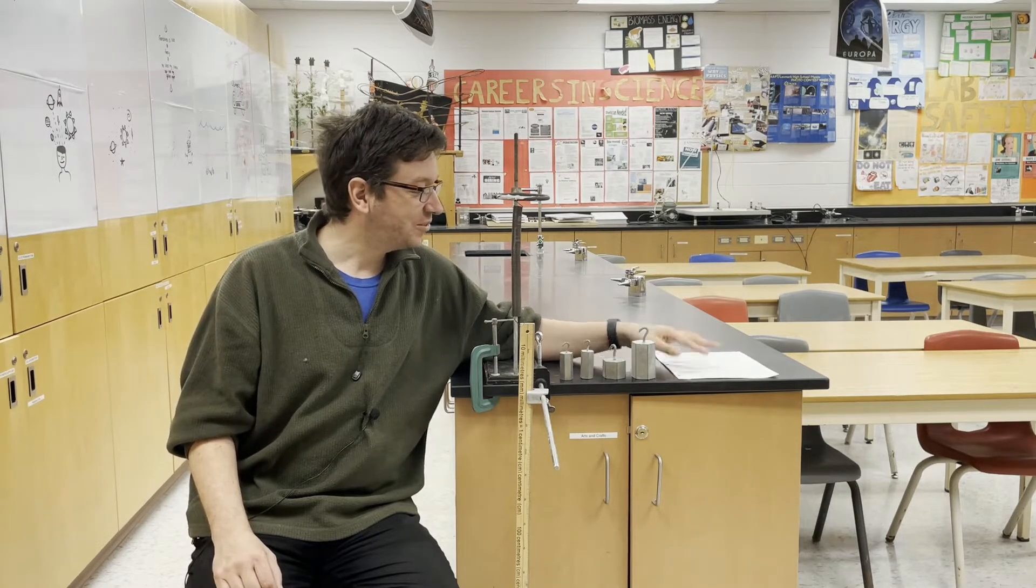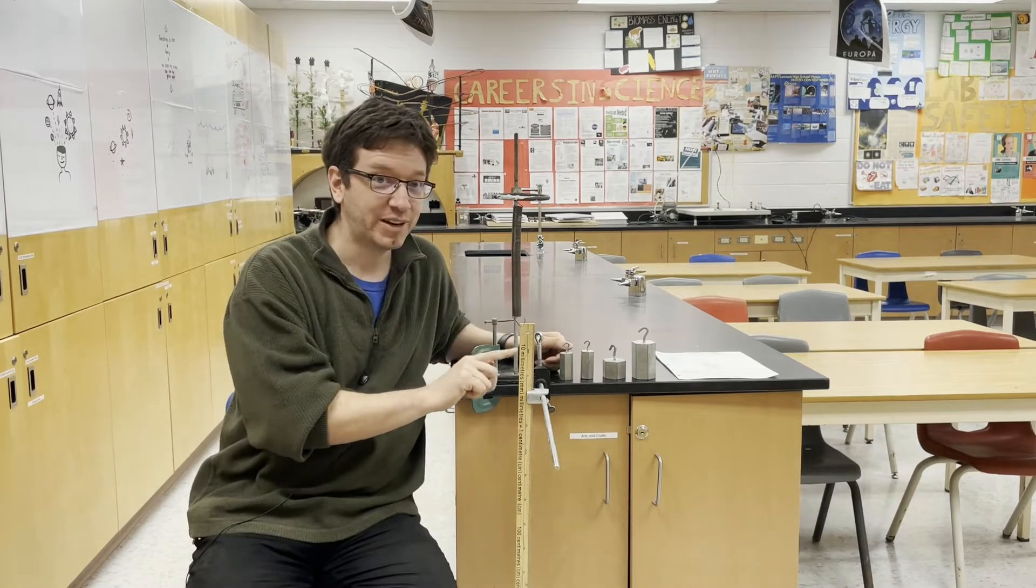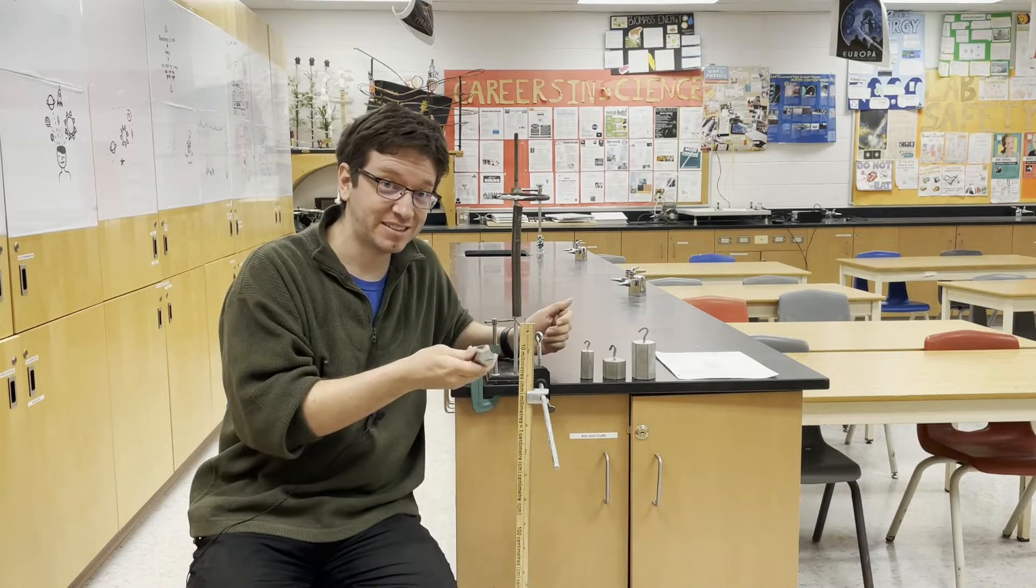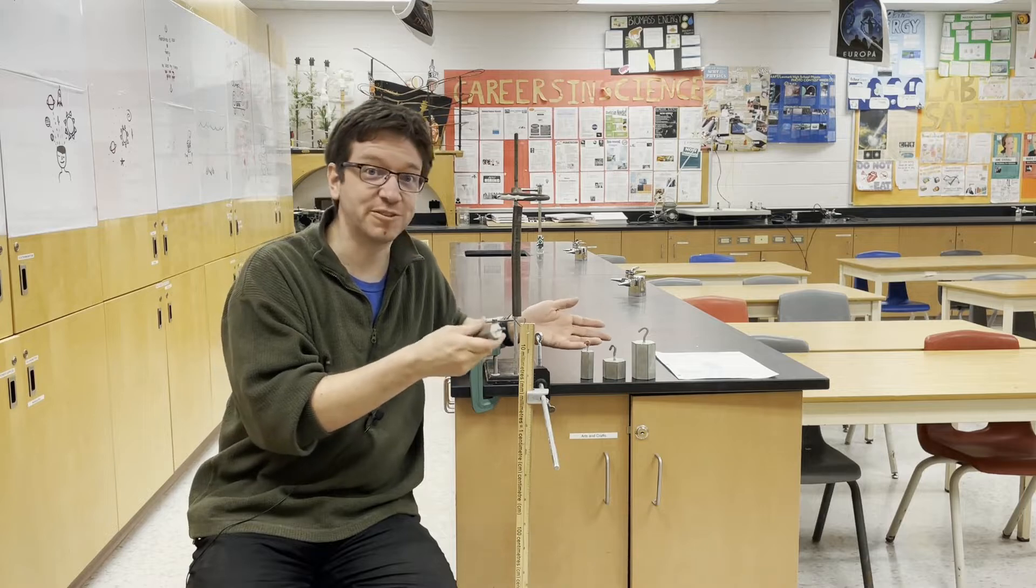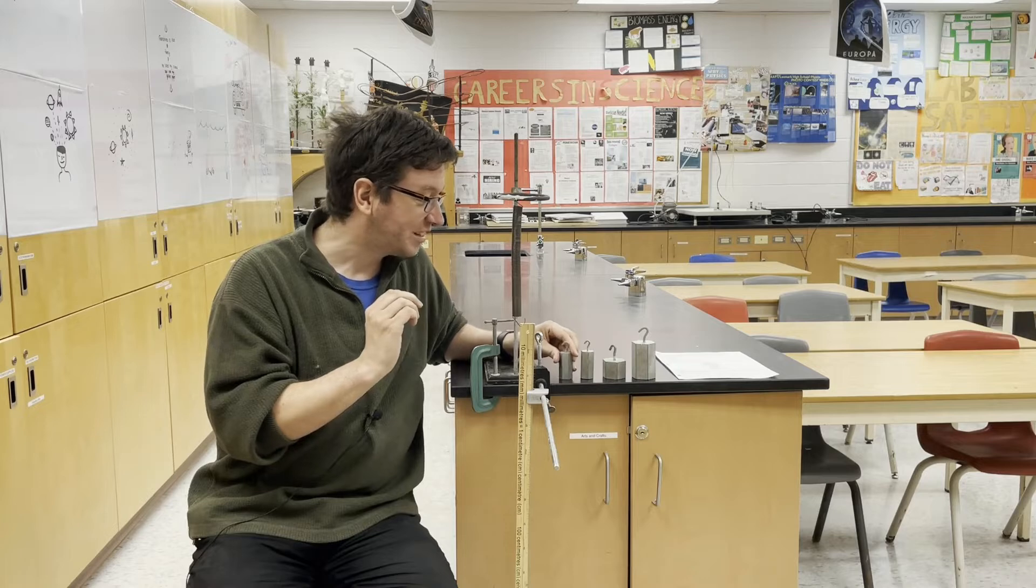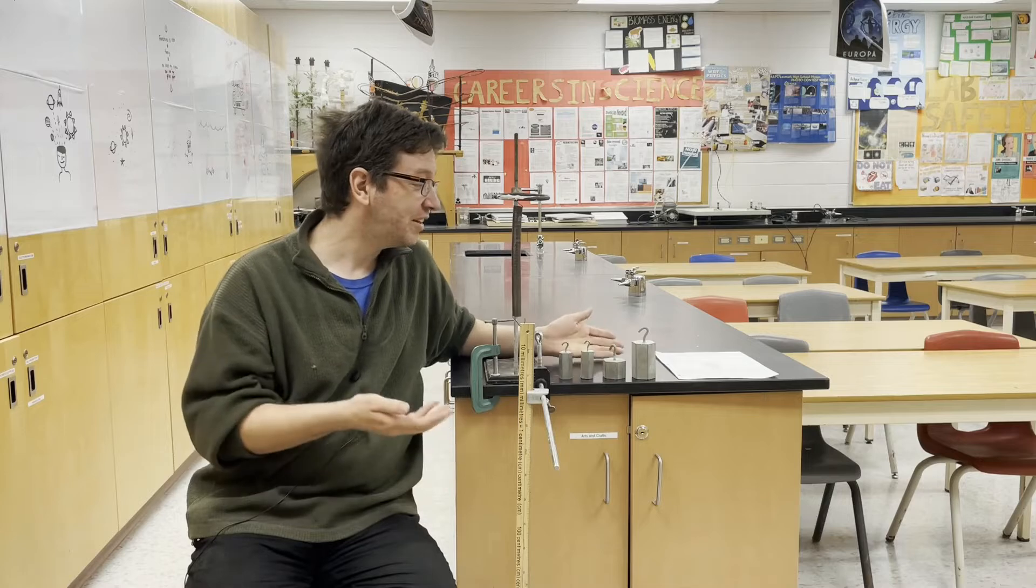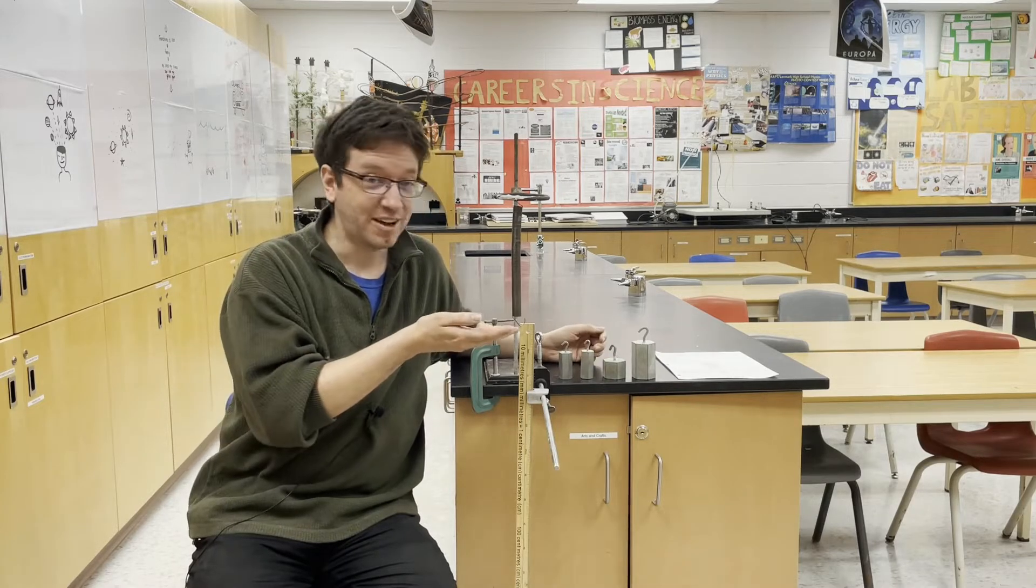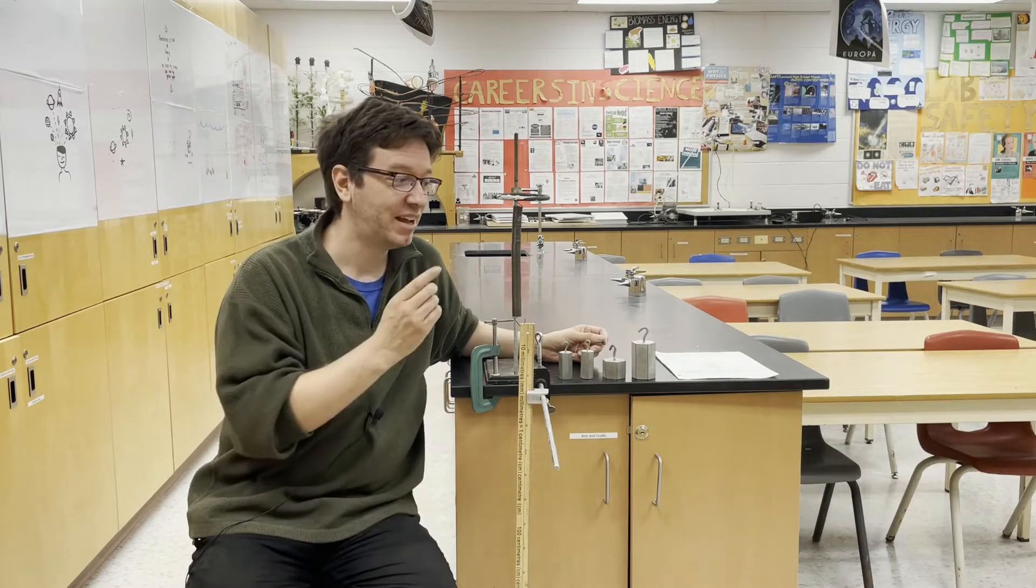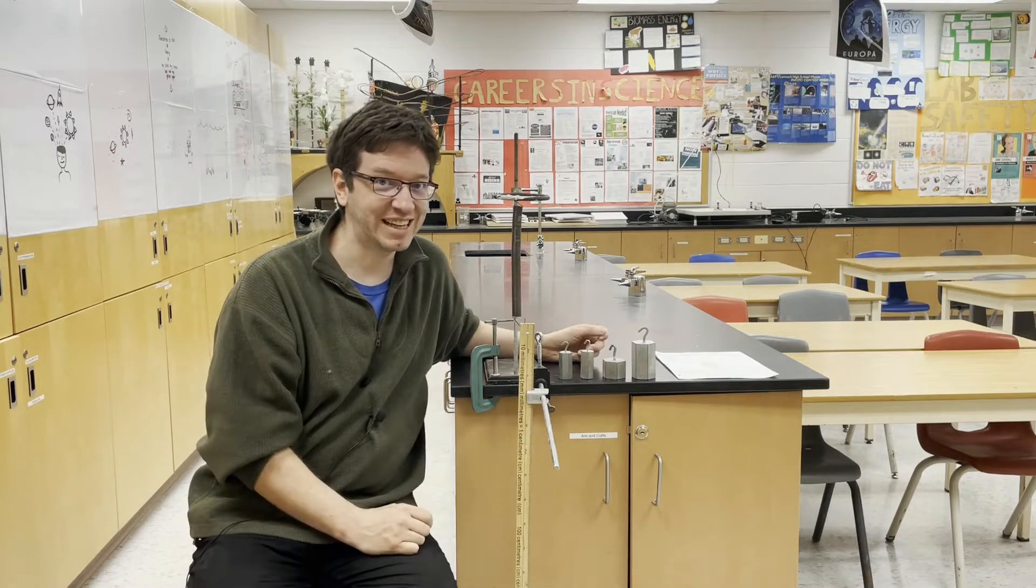Now what we're going to be doing is we are going to be measuring how far this spring extends from its equilibrium position as I attach different masses to it, and therefore as I exert different forces on it due to the weight of the mass. Then we're going to collect the data for different weights, and then we can plot a graph of force versus position from equilibrium, and the slope of that graph is going to be the spring or force constant of our spring. So let's get started.